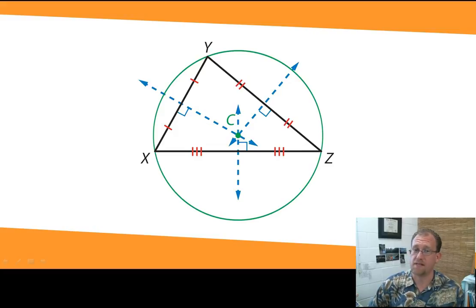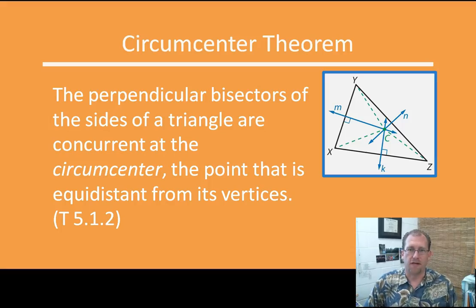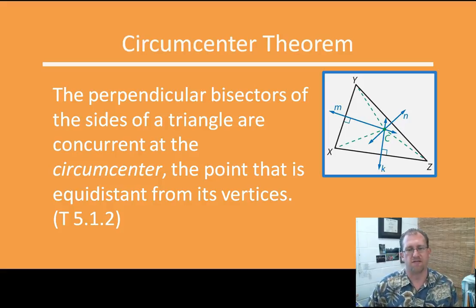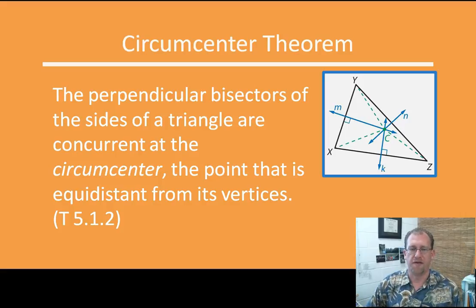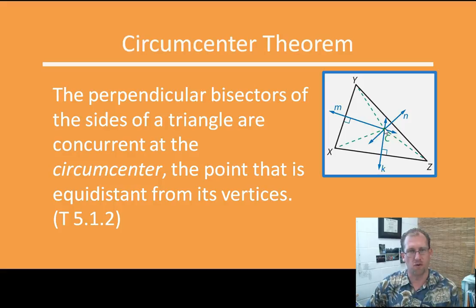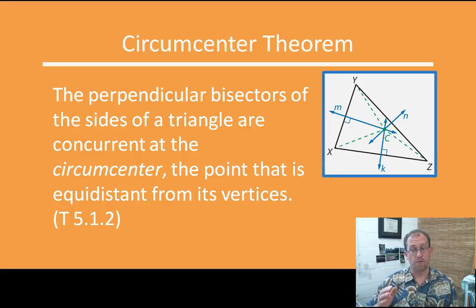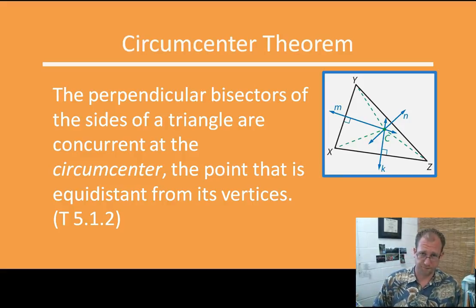You will do that a couple times today. Stated formally, the circumcenter theorem says that the perpendicular bisectors of the sides of a triangle are concurrent at the circumcenter — the point that is equidistant from all its vertices. Here are all of the perpendicular bisectors of this triangle; we find the place where they are concurrent. That point is equidistant from all three vertices of the triangle, and that will be the point where we can draw a circumscribed circle.